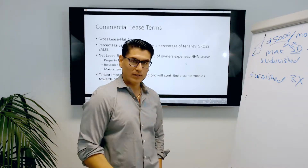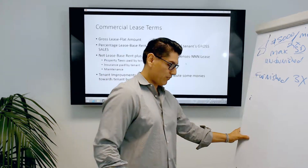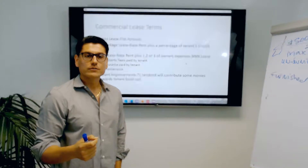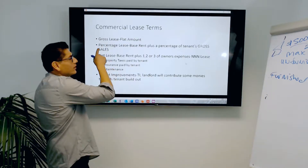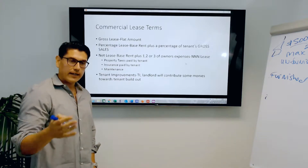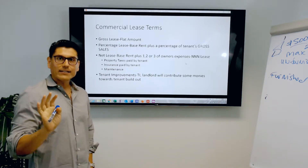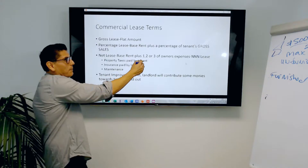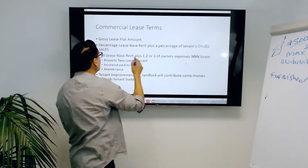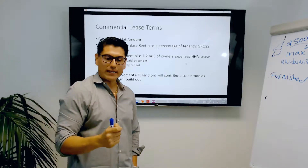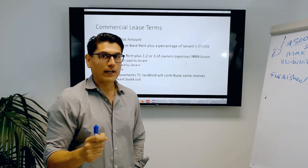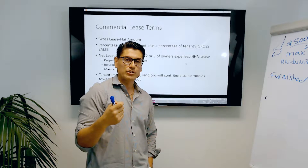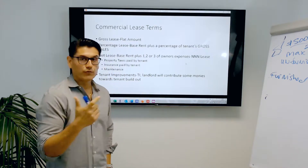Now let's talk about some commercial lease terms. If a landlord is going to charge you a flat amount, we say it's a gross lease — for example, $4,000 a month, that's it. If the landlord is going to charge you a base rent plus a percentage of your gross sales, that's a percentage lease. Keep in mind it's gross sales, not your net — so you may not make any money and still get charged a percentage of your gross, which is good for the landlord, not good for you.